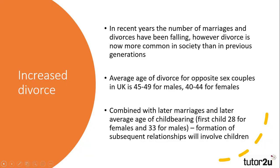With more people getting divorced than in previous generations, many lone parent families are now being formed. Despite the general decline in divorce — this is due to less people getting married — the proportion of marriages that end in divorce is relatively high at 42% in 2018. The average age of divorce is quite significant, with males divorcing at 45 to 49 and females at 40 to 44 on average, indicating that many marriages dissolve whilst there are dependent children in the household.